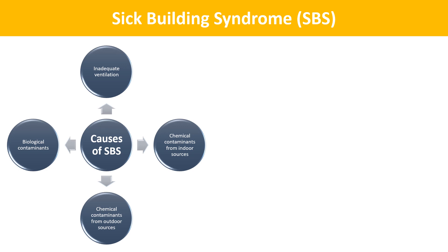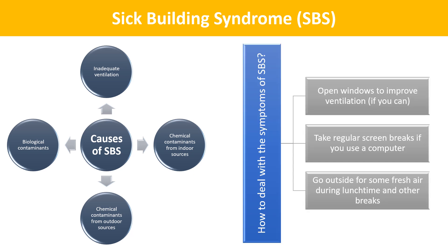Causes of Sick Building Syndrome include inadequate ventilation, chemical contaminants from indoor sources, chemical contaminants from outdoor sources, and biological contaminants. To deal with the symptoms of SBS: open windows to improve ventilation, take regular screen breaks if you use a computer, and go outside for some fresh air during lunchtime and other breaks.